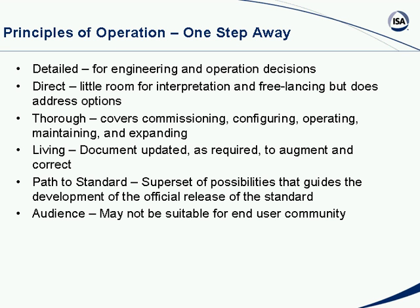The whole point of the principles of operation is that it's one step away from a standard — it's not the standard, but it provides the details needed to write the standard. If the principles of operation aren't right, we can't get to a standard. The standard will likely be a subset of the principles of operation — the POO defines a boundary within which the standard will be written. The details are in there for engineering and operational decisions. It has to be direct with little room for interpretation, but it does have options — those options are defined in excruciating detail so that if you choose to execute an option, you must implement it in the way described. No freelancing, but it does address options.